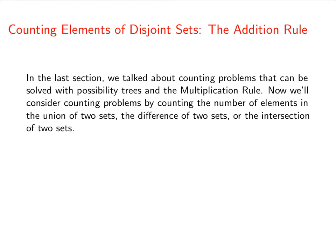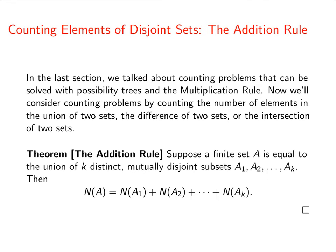Now we're going to do counting problems by counting the number of elements in the union of two sets, the difference of two sets, or the intersection of two sets. The addition rule says that if we have a bunch of mutually disjoint subsets of a set A, and A is equal to the union of those sets, like a partition, then the number of elements in A is just the sum of the number of elements in each of the mutually disjoint subsets.